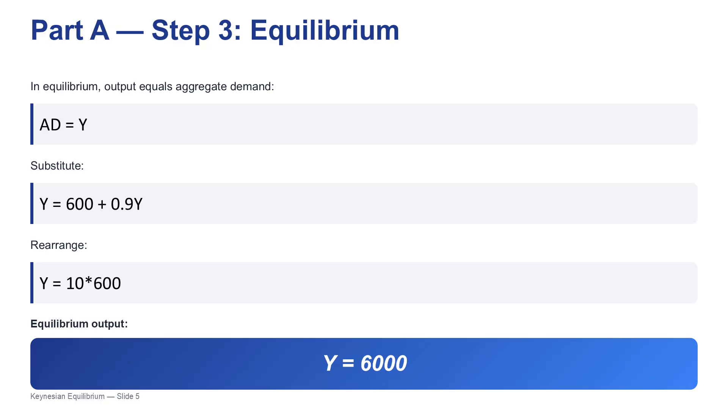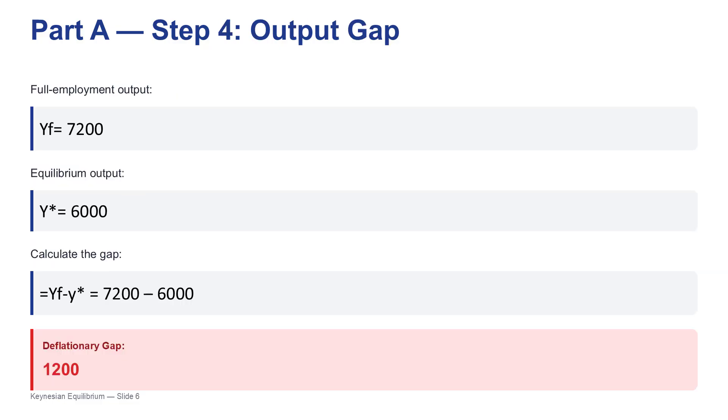But is that a good place to be? Just because it's the equilibrium doesn't mean it's optimal, does it? Absolutely not. And that brings us to the output gap. Remember, the source told us that full employment output is 7,200. So we could be producing at 7,200, but we're only producing at 6,000. That's a shortfall of 1,200 million shekels. And because our actual output is below our potential, we call this a deflationary gap. What does that actually feel like for people in this economy? It feels like stagnation. It means you've got idle resources, factories that aren't running at full capacity, construction projects on hold, and most importantly, higher unemployment.